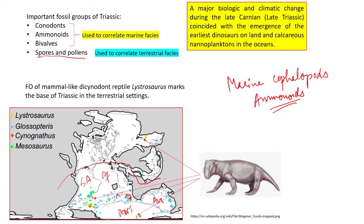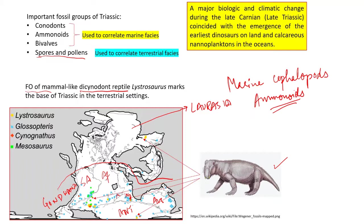During the Triassic period, the first occurrence of a mammal-like dicynodont reptile, Lystrosaurus, is important. Its fossils have been found in Africa, India, and Antarctica in the Gondwana land. On this basis, it helps to establish that all these continents were together at one time.